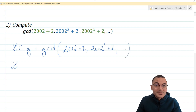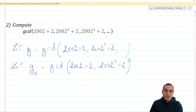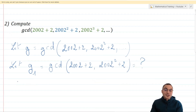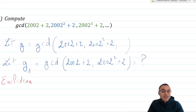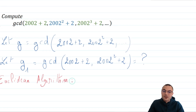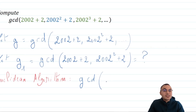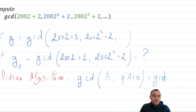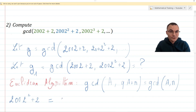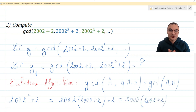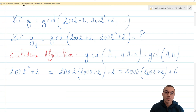Let's try to compute the greatest common divisor of just the first two terms. Let's call it G1. To find G1, we'll use the Euclidean algorithm. This algorithm states that the greatest common divisor of A and B is equal to the greatest common divisor of A and the remainder when B is divided by A. So the next step is to divide 2002 squared plus 2 by 2002 plus 2, which rewrites as follows. Do not hesitate to pause the video and verify this equality.